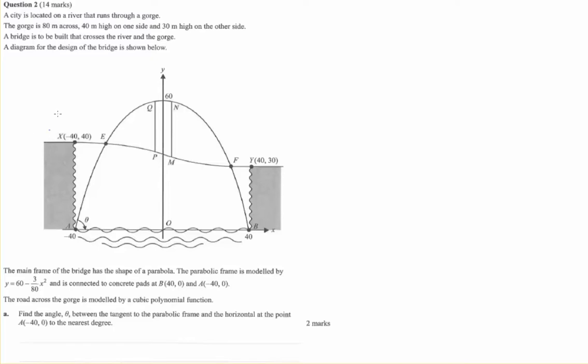Here's question 2 of the extended response. We're looking at this picture with a parabolic frame supporting this bridge. The equation of the frame is given at the bottom: f(x) = 60 - 3/80 x².